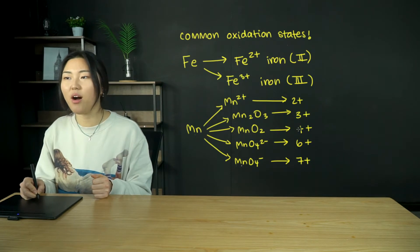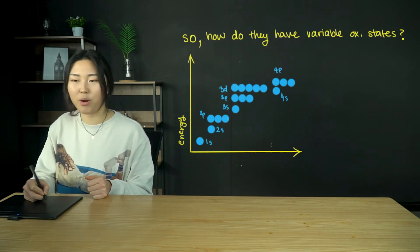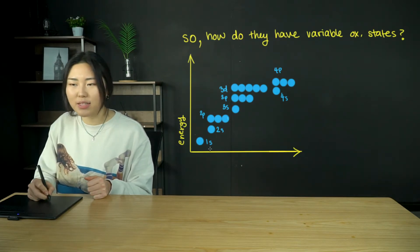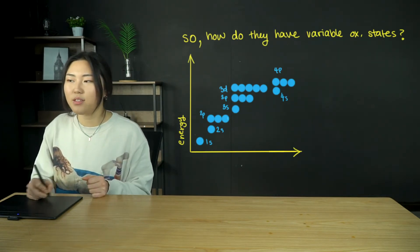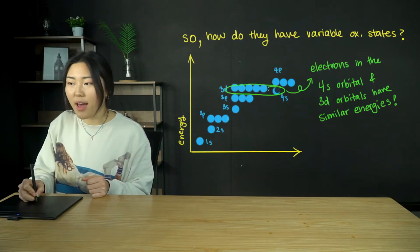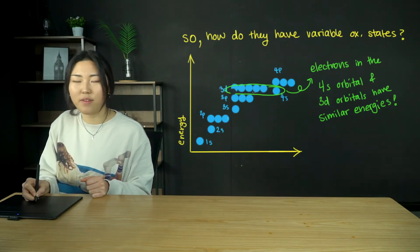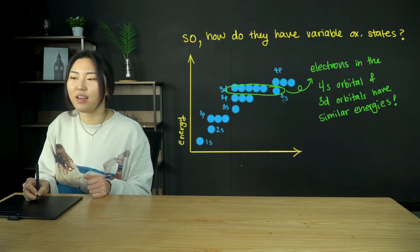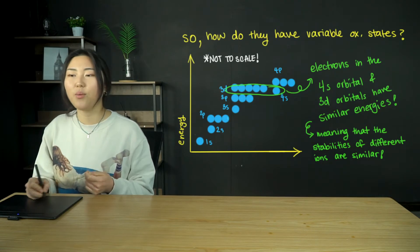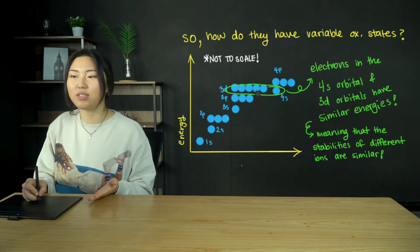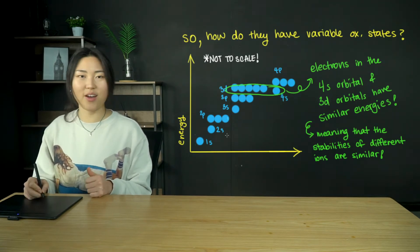How do transition metals have variable oxidation states? Looking at an energy diagram with different shells and sub-shells — 1s, 2s, 2p, 3s, 3p, 3d, 4s, and 4p — the electrons in the 4s and 3d orbitals actually have very similar energies. In fact, 4s is very slightly lower in energy than 3d. This means the stabilities of different ions are similar depending on how many electrons they have in 4s or 3d. Note: this diagram is not to scale.